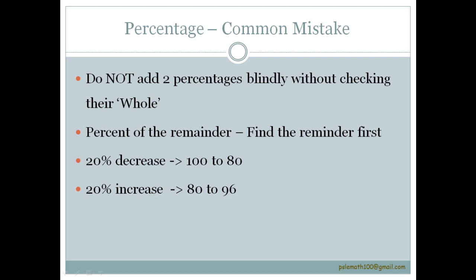Another common mistake is 20% decrease from 100 drops to 80, but a 20% increase from 80 does not become 100 but it becomes 96. 20% increase on 100 only will become 120.